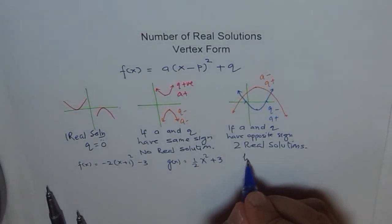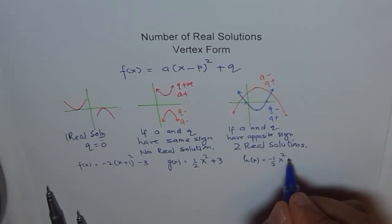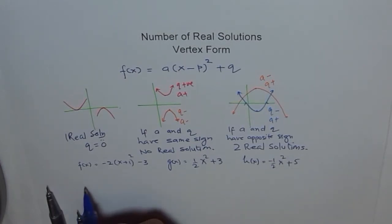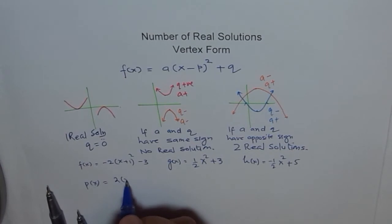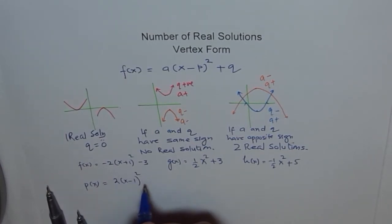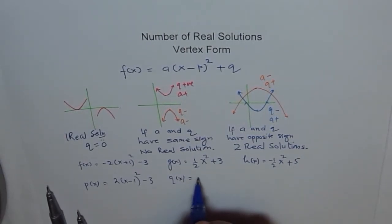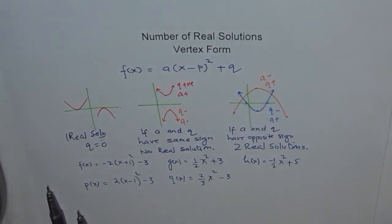If I have h(x) = -(1/2)x² + 5, how many solutions do we have? If we have p(x) = 2(x - 1)² - 3, how many solutions should we get? If we have q(x) equals to, I am just writing at random these equations.